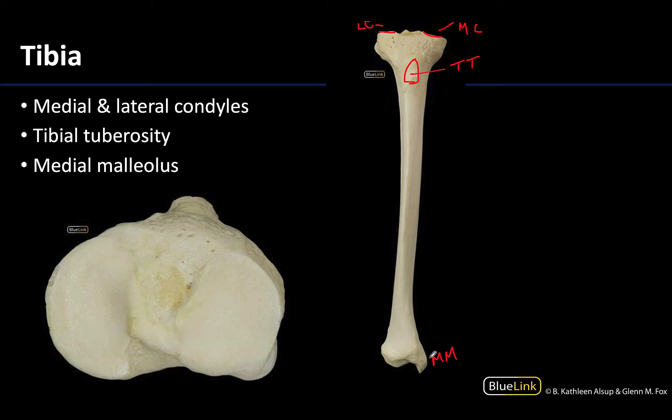In this distal portion, this medial projection is going to be the medial malleolus, and you will have a matching lateral malleolus on the fibula.